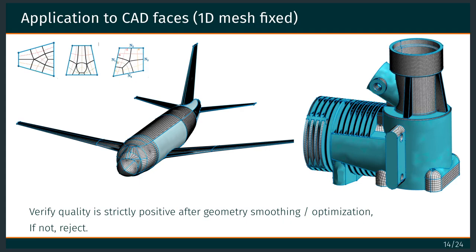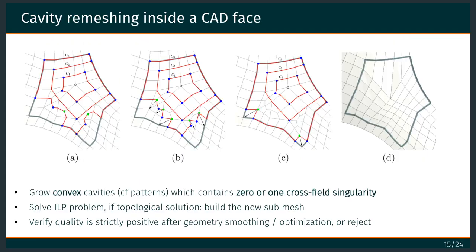By applying this cavity remeshing, we can build a very complete quad mesh of all CAD faces. Because even if the CAD model is complicated, a lot of faces have simple topologies — triangular, rectangular, or pentagonal. Then we try this pattern-matching method, map the mesh, smooth it, and if it's okay, we keep it. The second step is to apply this cavity remeshing massively inside the quad mesh.